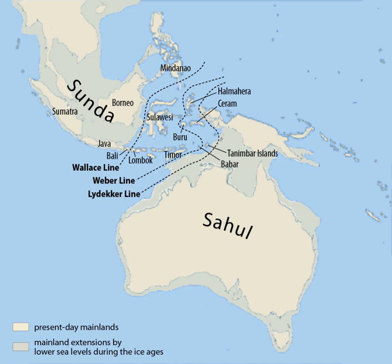The name 'Sunda' goes back to antiquity, appearing in Ptolemy's Geography written around 150 AD. In an 1852 publication, English navigator George Windsor Earle advanced the idea of a great Asiatic bank. Based in part on common features of mammals found in Java, Borneo and Sumatra, explorers and scientists began measuring and mapping the seas of Southeast Asia in the 1870s, primarily using depth-sounding.